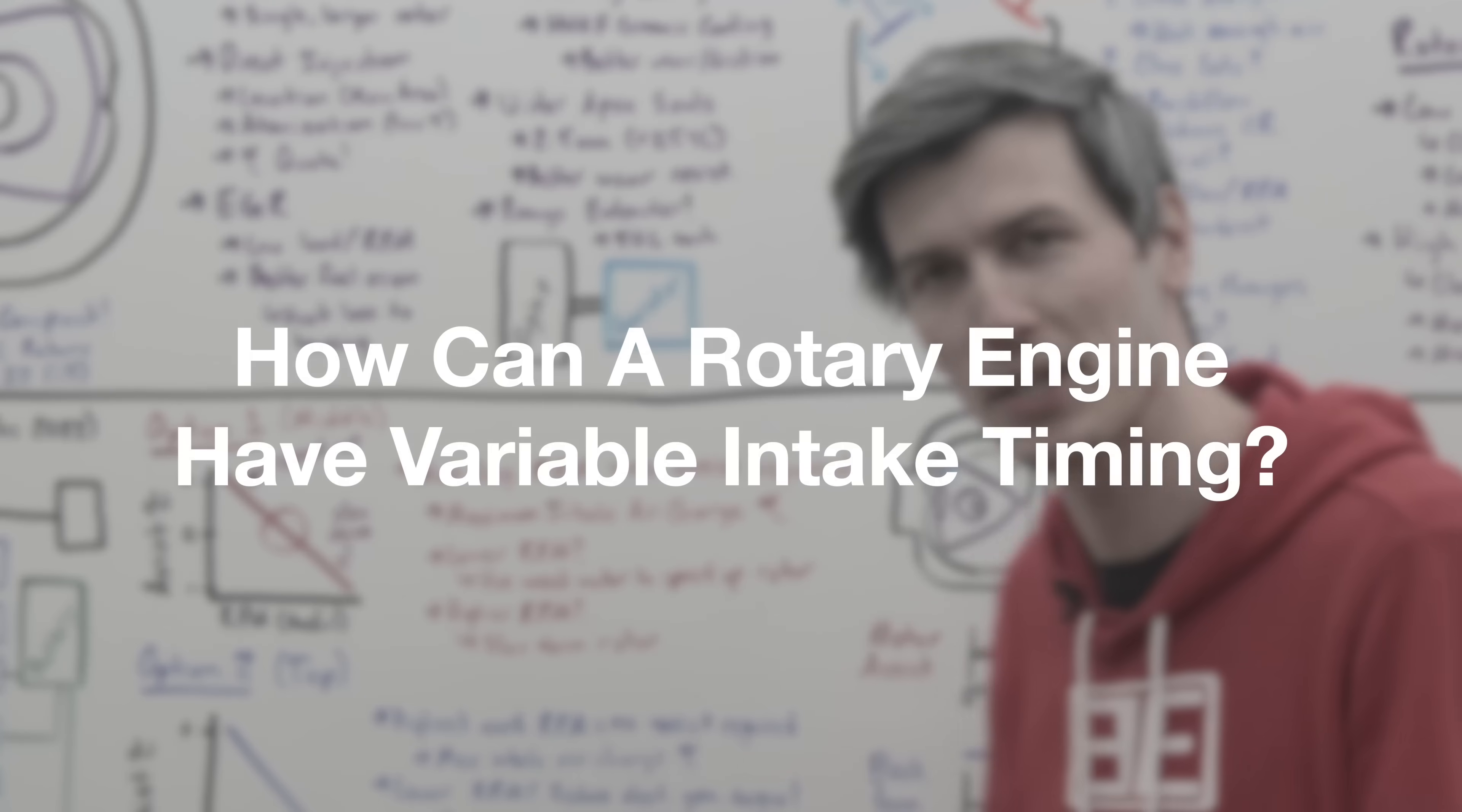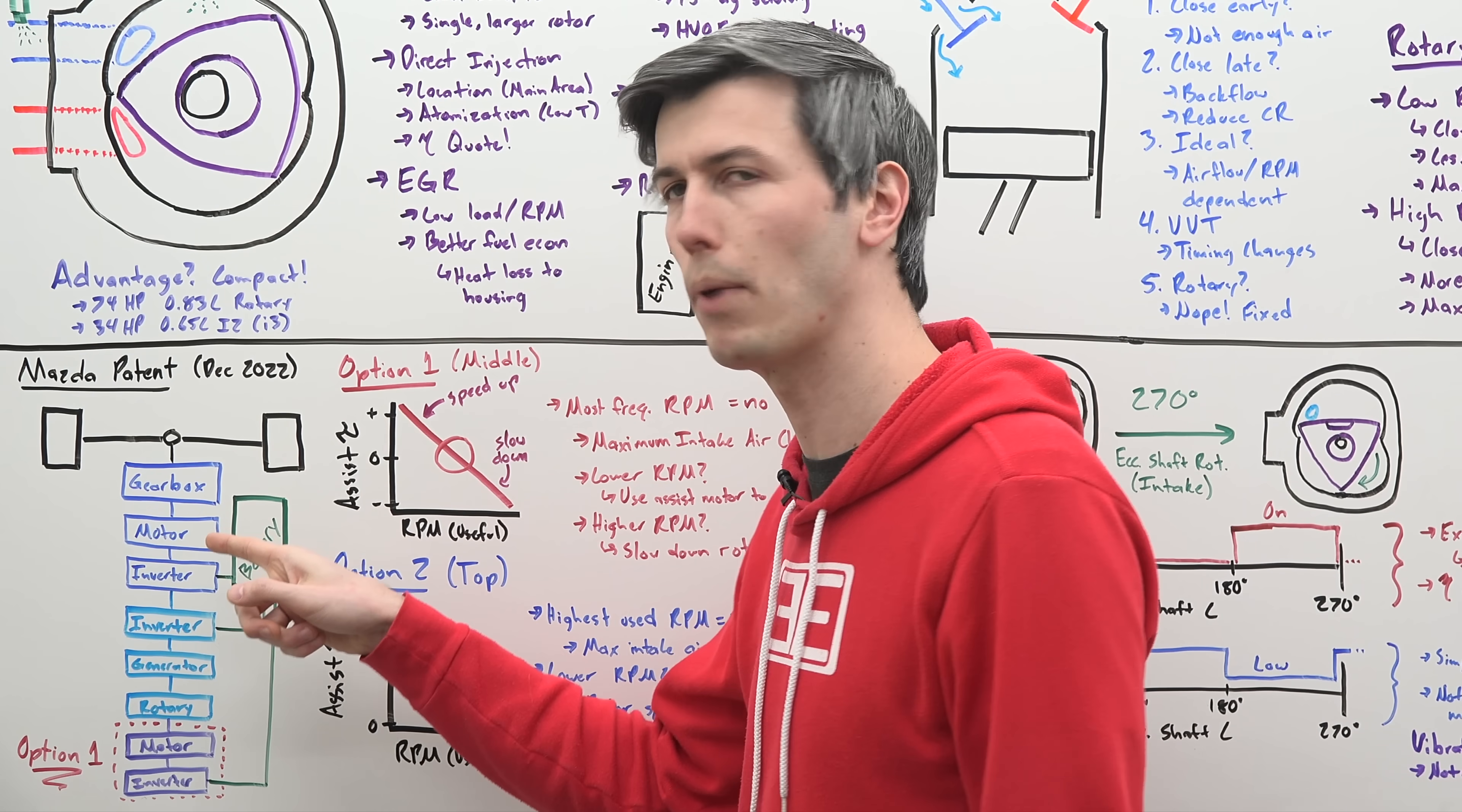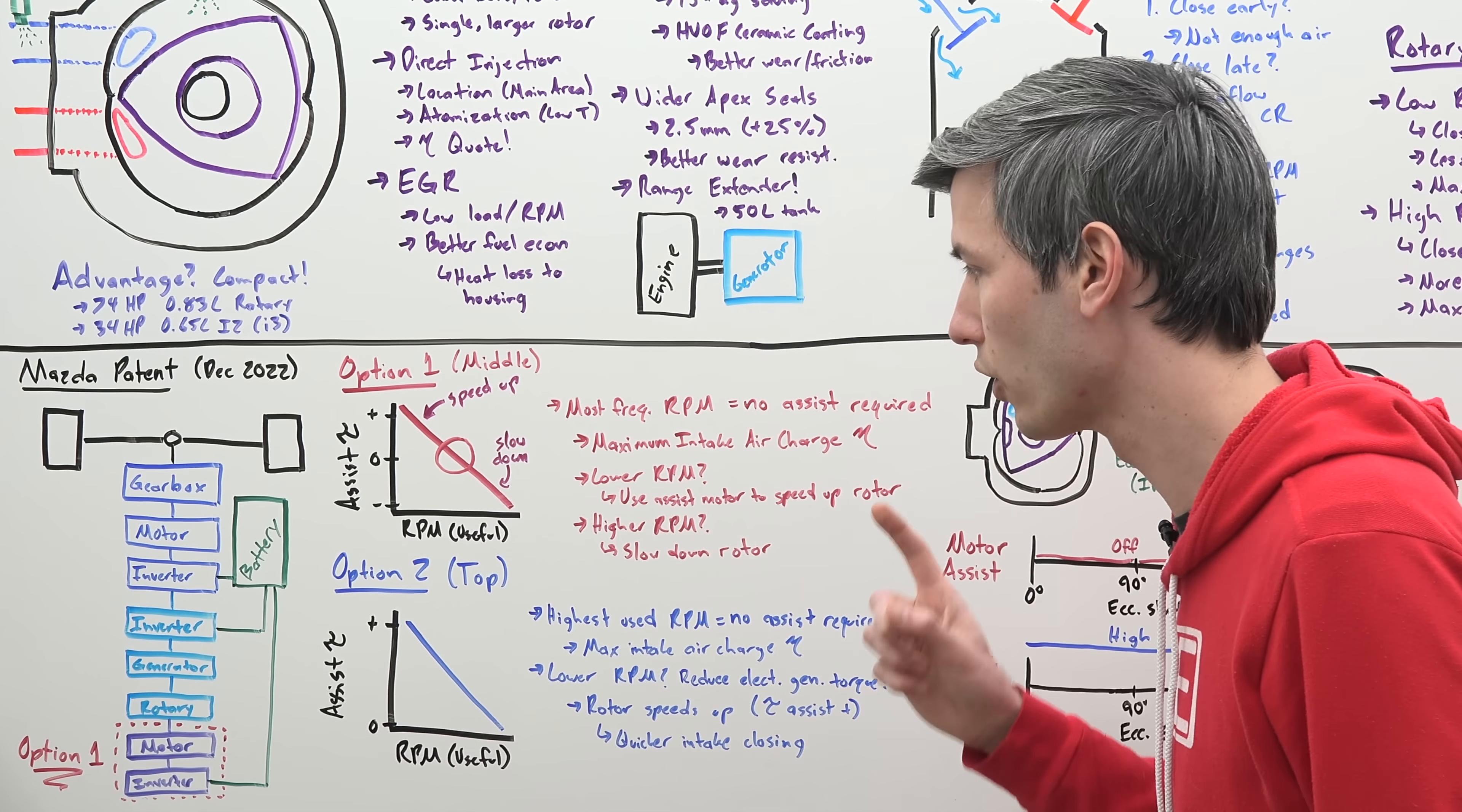Well a Mazda patent from December of 2022 answers this question. So first let's understand the vehicle layout based on this patent which is very similar to how it is actually laid out in the MX-30. So we have a battery pack that battery pack sends energy to an inverter the inverter sends the energy to a motor the motor rotates a gearbox that gearbox ultimately rotates your driven wheels in this case it is front wheel drive. So you also have a rotary engine which powers a generator and that generator can be used to either send power to that motor powering the wheels or it can be used to send power to recharge your battery pack.